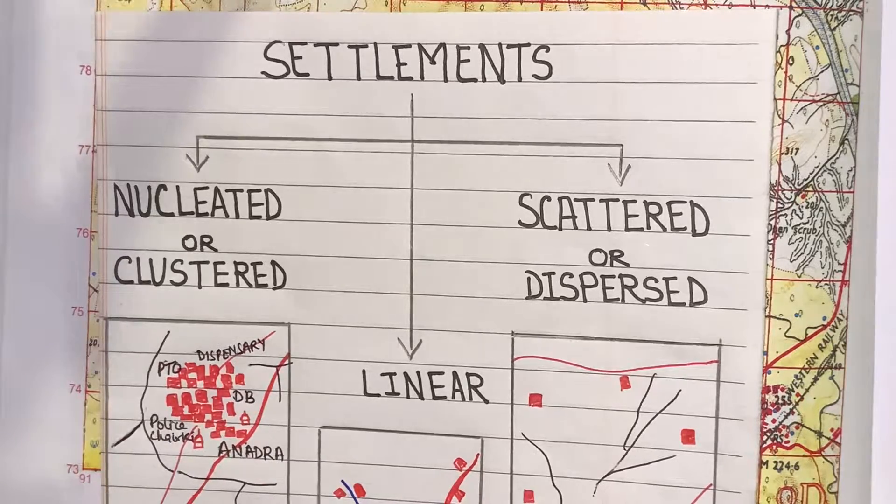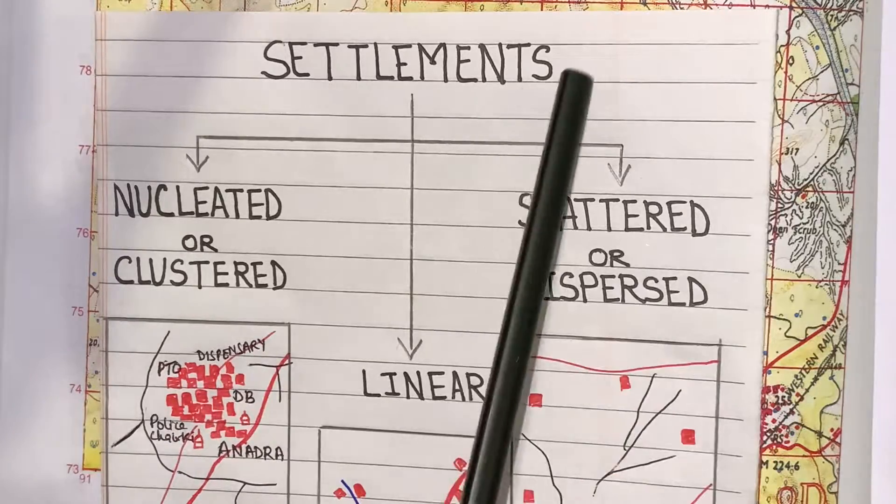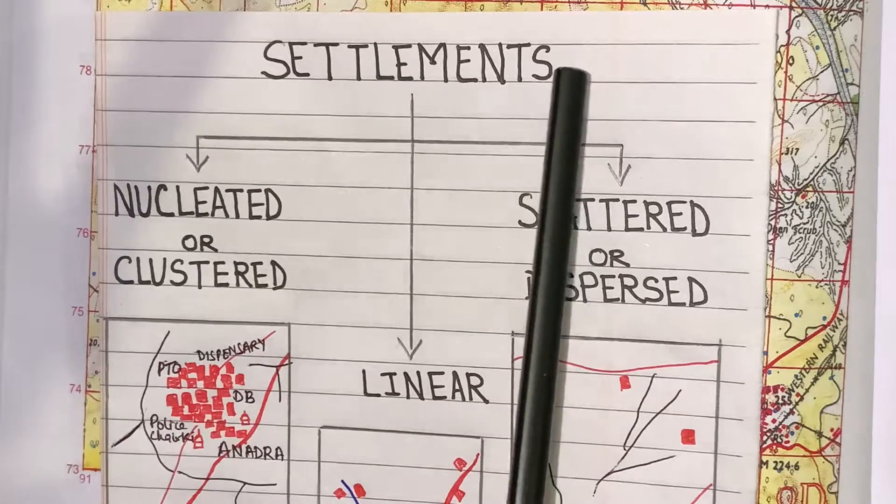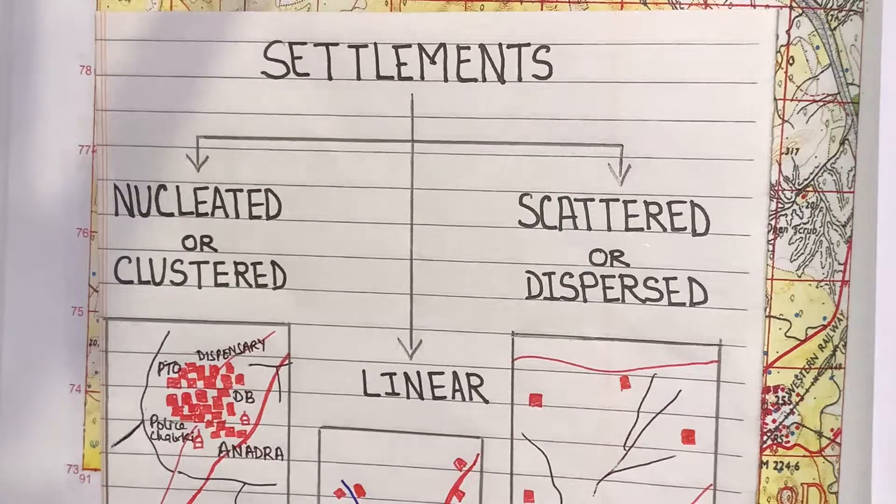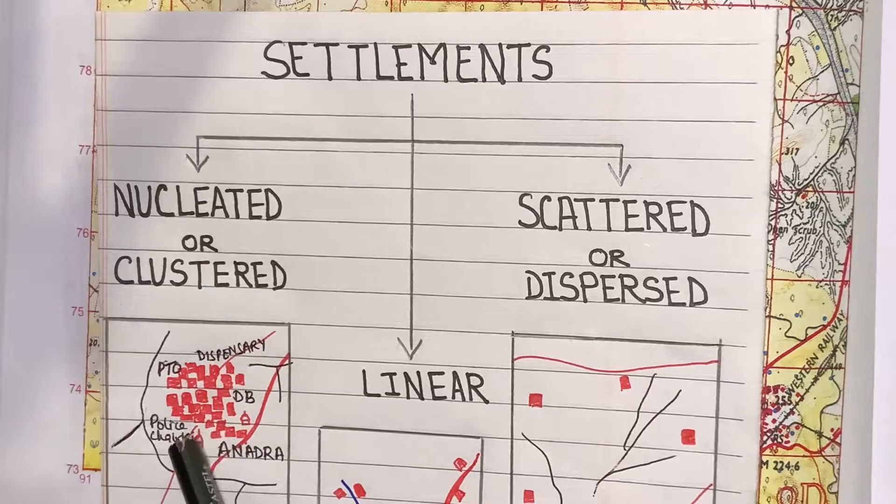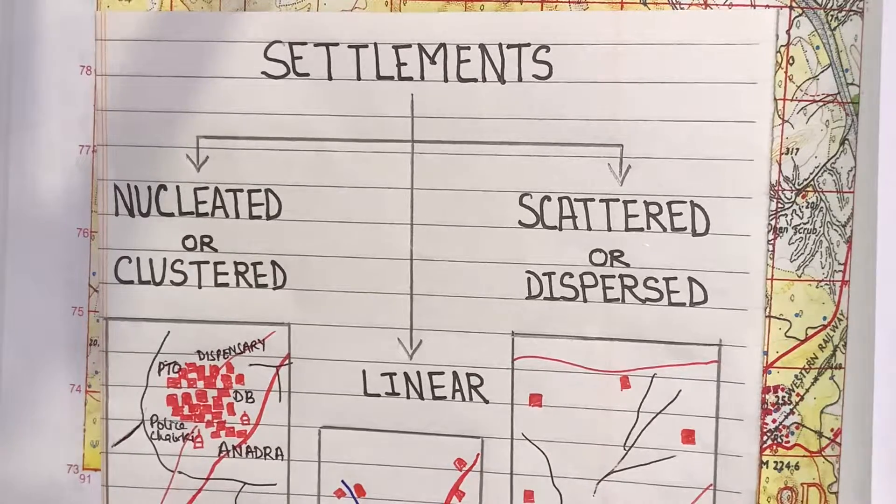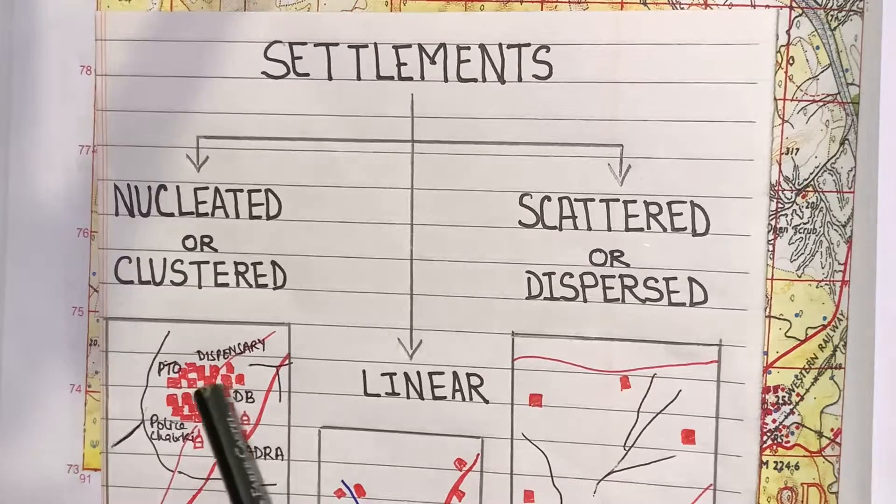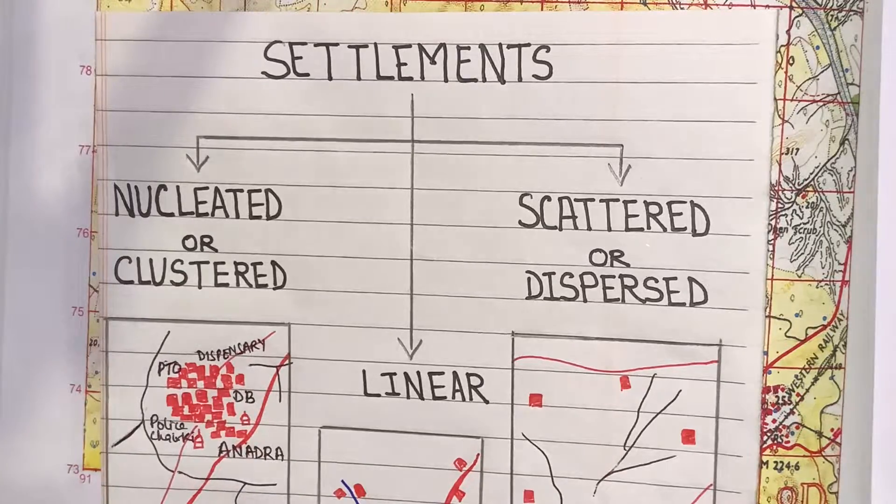First, what do you understand by this term settlements? A settlement is a colony or a small community or a small place where people reside. In topographical maps, it is shown in red color.